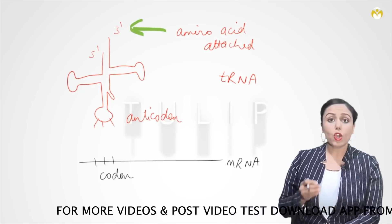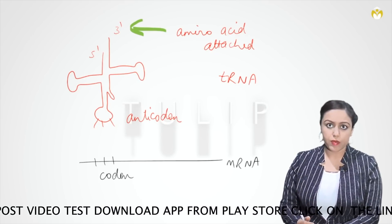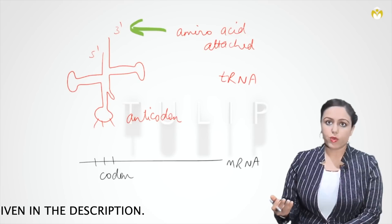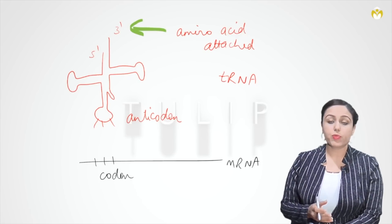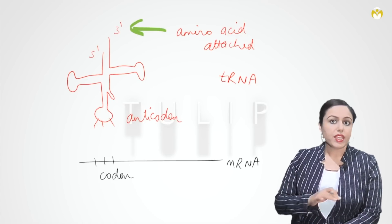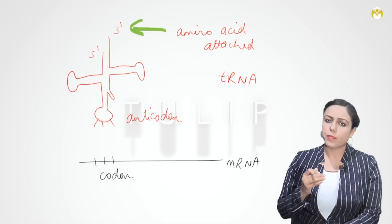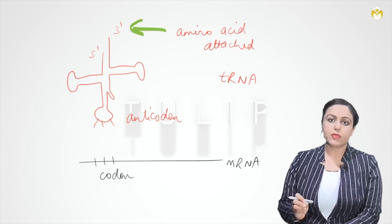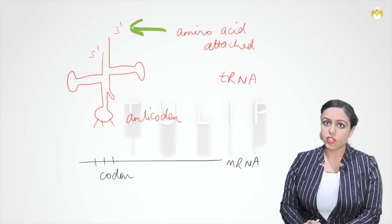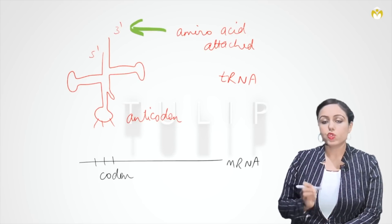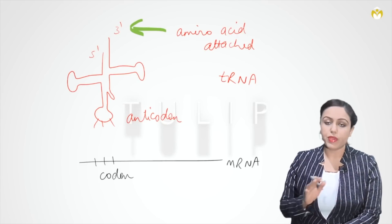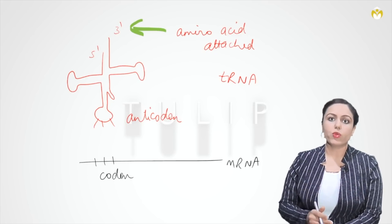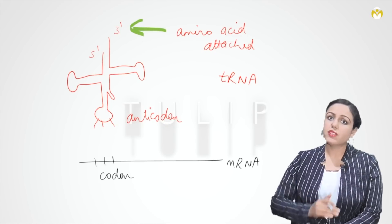Codon and anticodon have complementary base pairing. In translation, the codon on mRNA will recognize the anticodon — codon and anticodon bind. One basic point: the codon can see only the anticodon, it cannot see which amino acid is attached. For example, suppose the codon is for cysteine and the anticodon is also for cysteine, but a wrong amino acid such as methionine is attached at the three-prime end — nobody can detect this error.